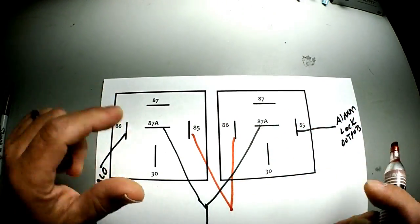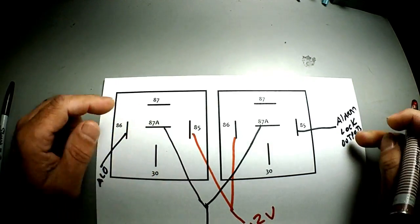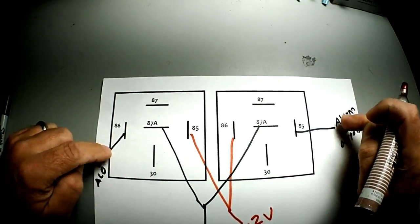85 and 86, the leftover two prongs of your relays, are going to go to 12 volts more than likely, because most time aftermarket alarms are a negative trigger.